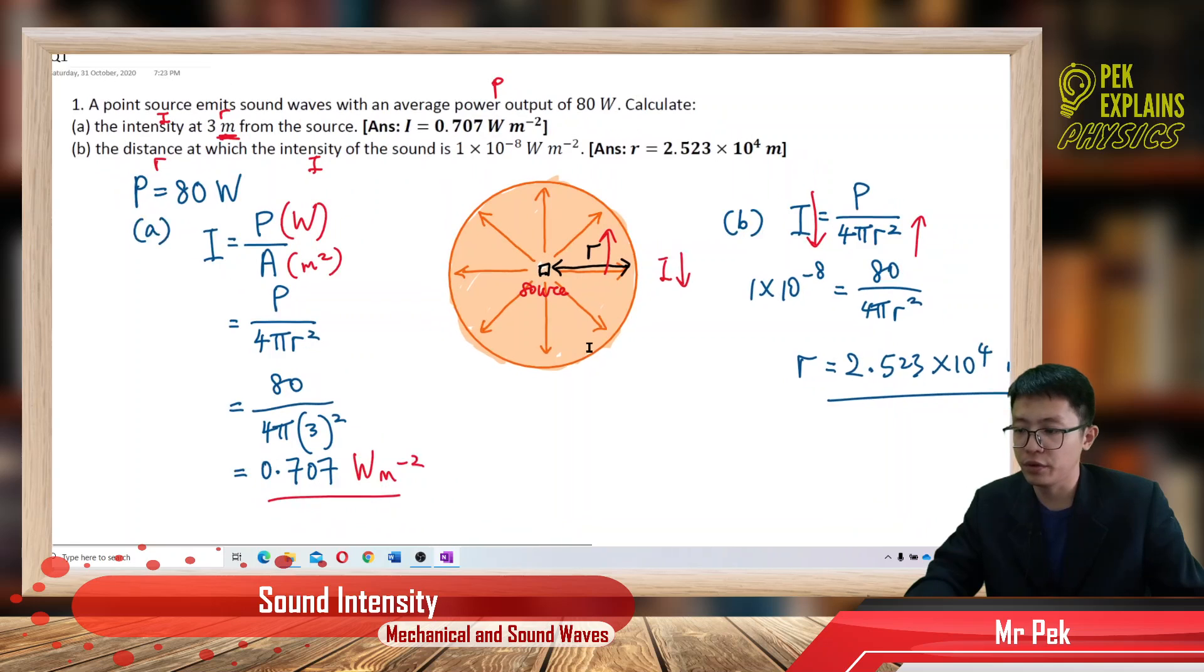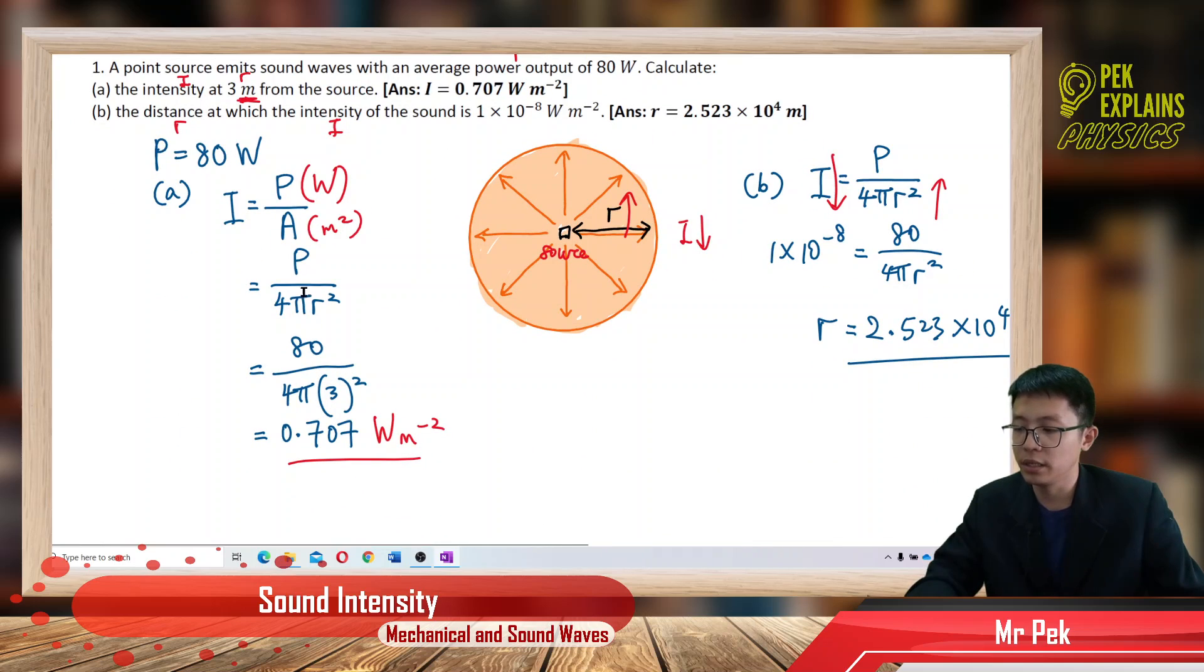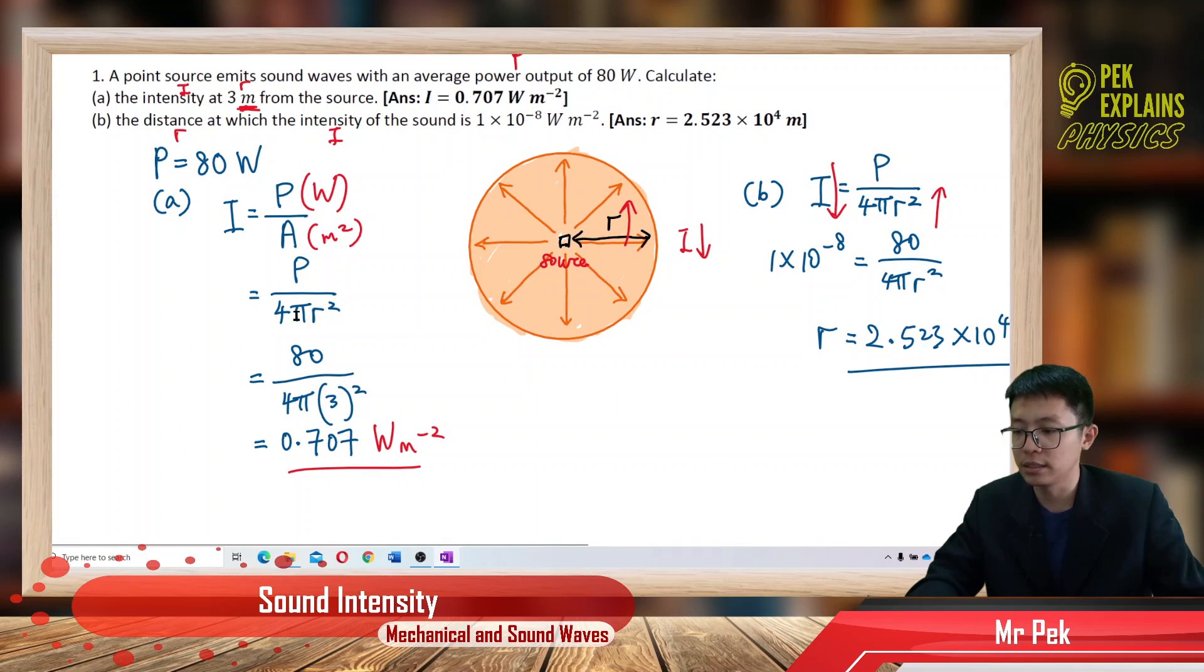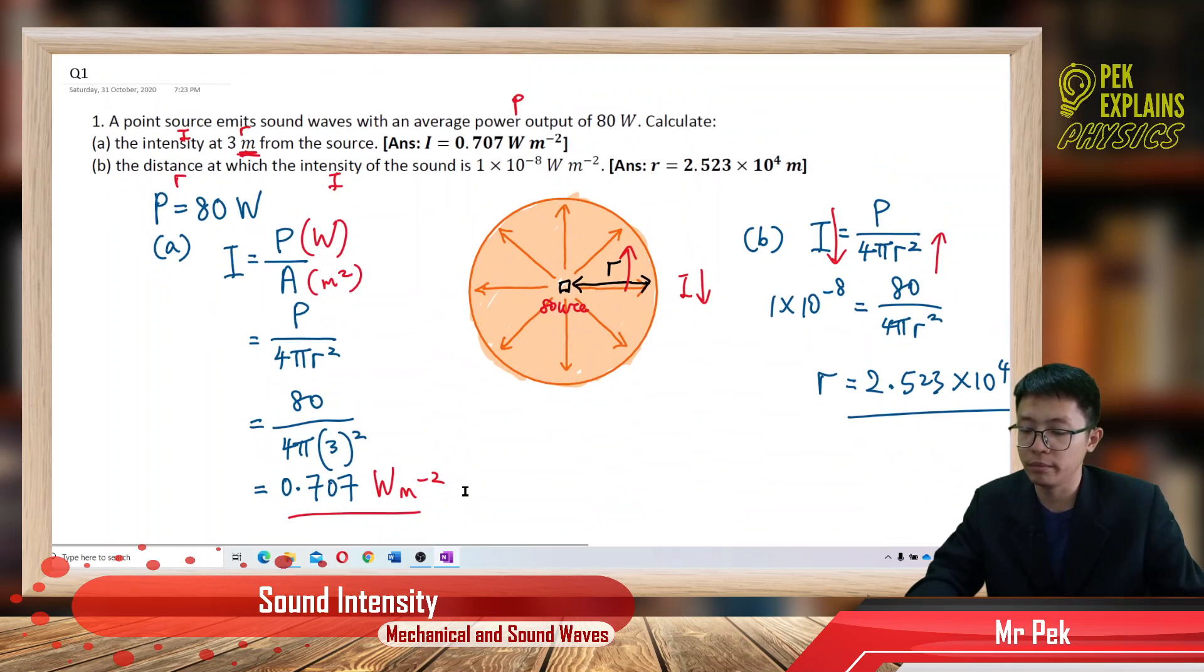So very easy, very straightforward. From distance, get intensity. From intensity, get back the distance. The unit for intensity is watts per meter square. Be careful with the unit, make sure all in SI units. So that's it for power over area, which is the intensity. Stay tuned for the next videos.